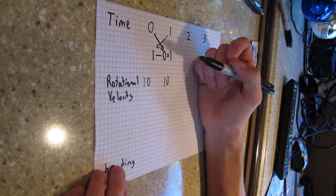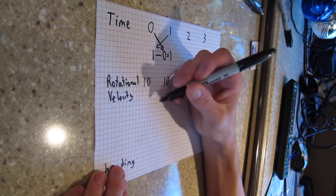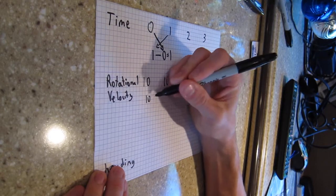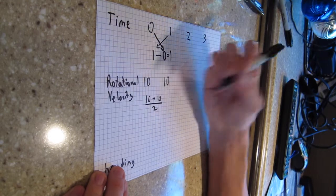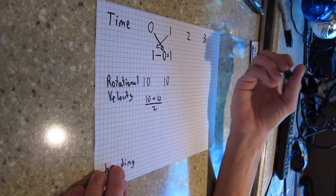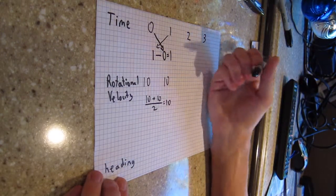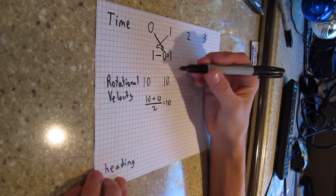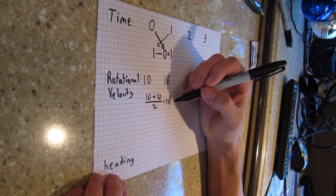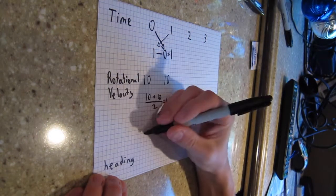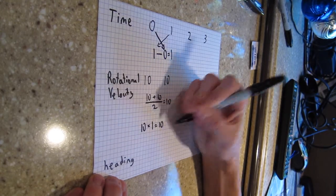And then what we can do is we calculate the average of these two velocities. So in this case, it would be 10 plus 10 divided by 2, which happens to give us 10. So then what we do to calculate our heading is we take our velocity times our time. So we've got 10 times 1 equals 10.